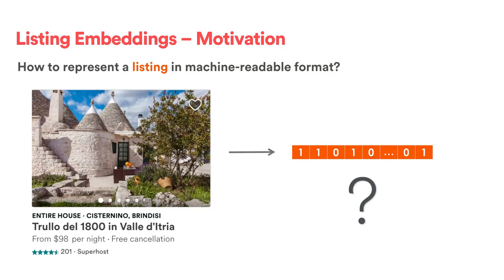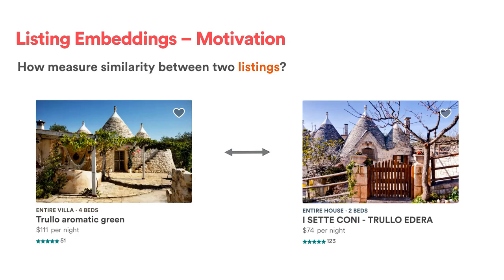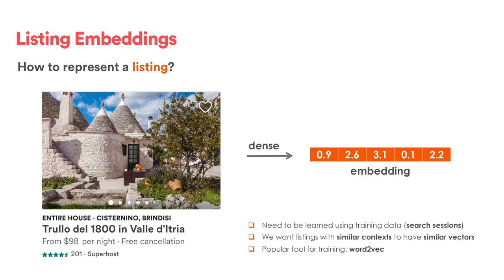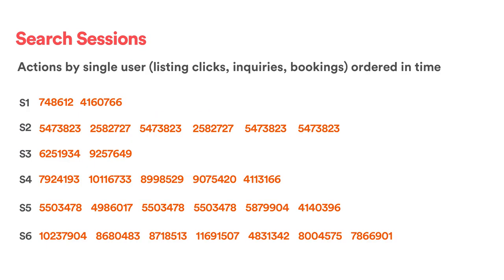A question arises: how do we represent a listing in a machine-readable format such that we can measure these similarities? One obvious way is to use structured data about a listing and represent it using one-hot encoding. Another way is to represent a listing using an embedding, where each vector dimension doesn't really have any meaning, and the vector is learned using training data — in our case, search sessions.